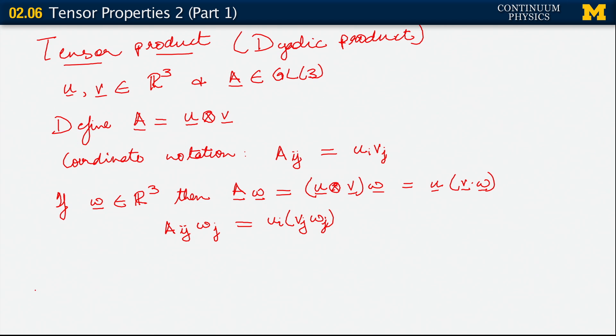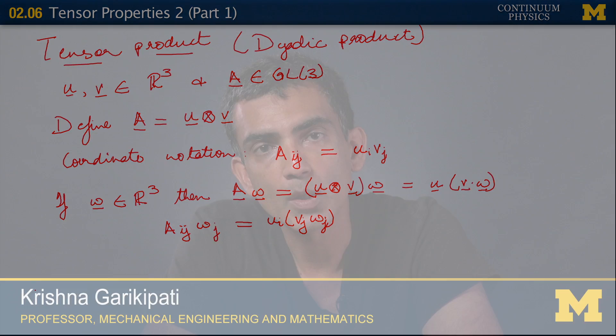In coordinate notation, what this means is that A_ij w_j equals u_i v_j w_j. So this is our tensor product and it has considerable uses. One of the most important uses is that it allows us a way to write out a tensor fully in terms of the basis vectors.